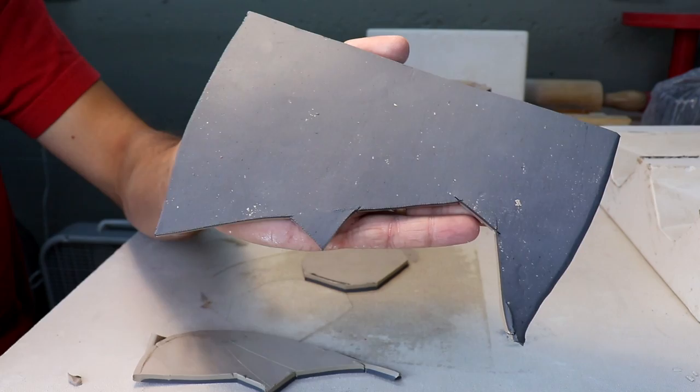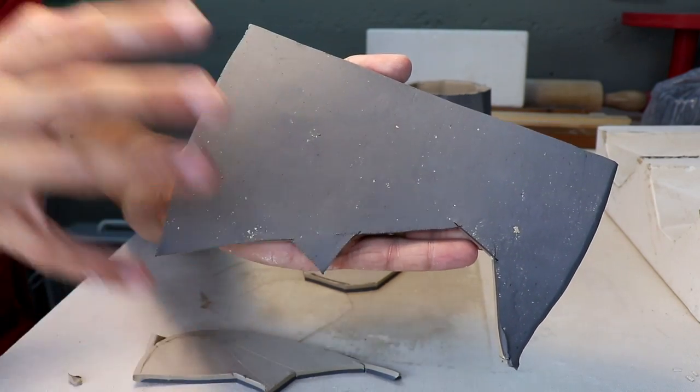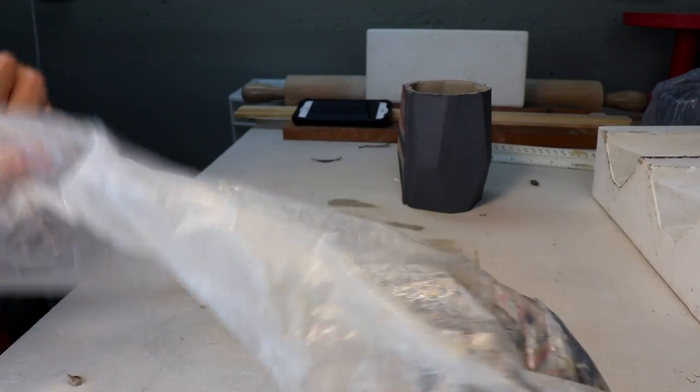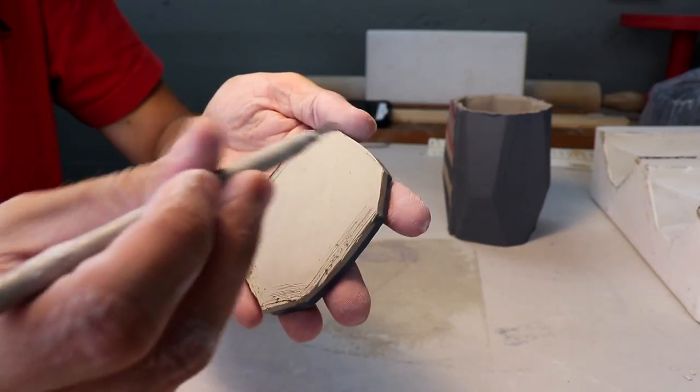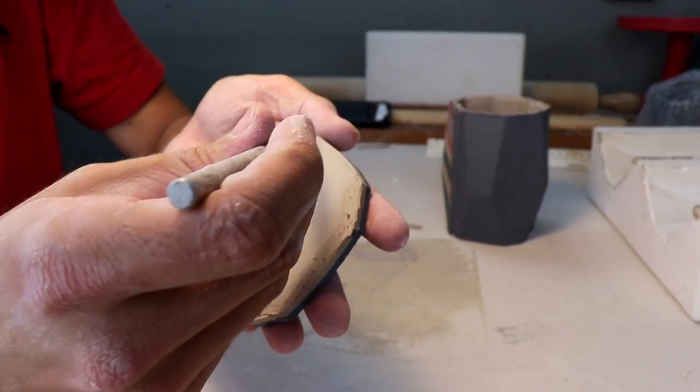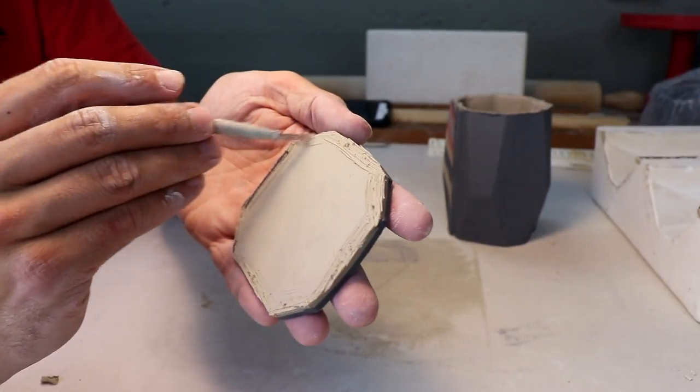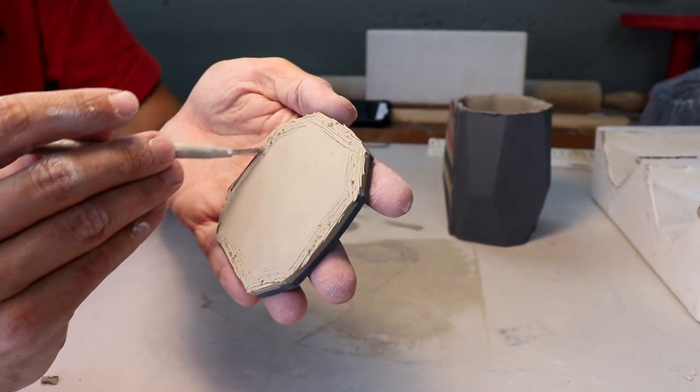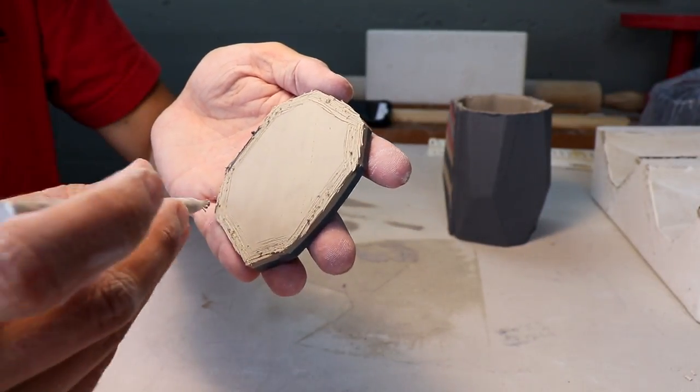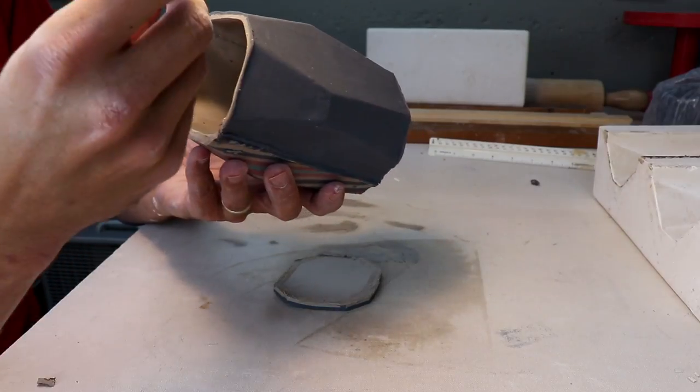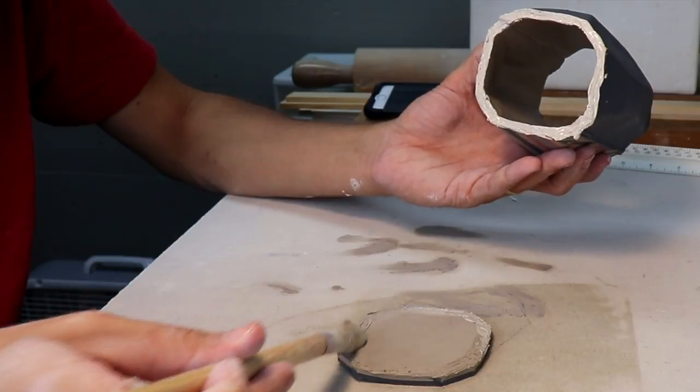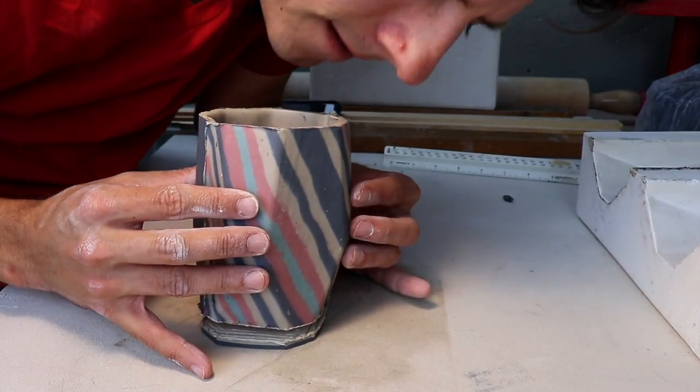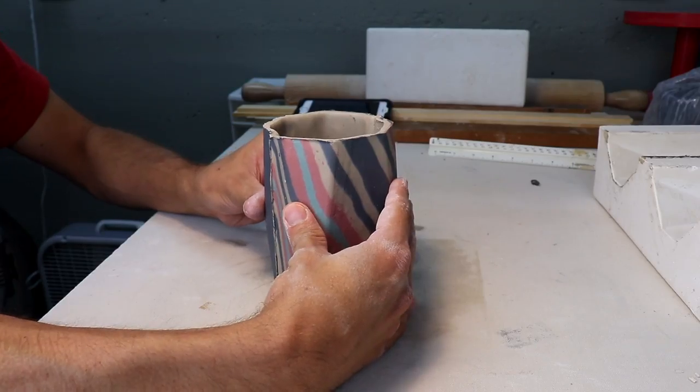And what do you do with the scraps? You save them for a big Narakomi scrap block. What's nice about using the white clay for the inside is that I can add a lot of slip and then I can smooth it out with a brush and you won't even know that I scored it on.